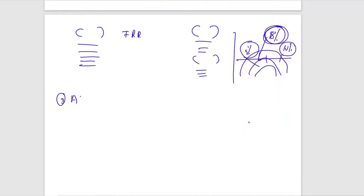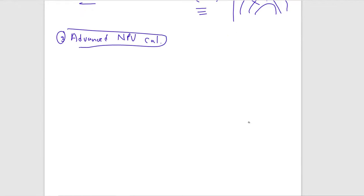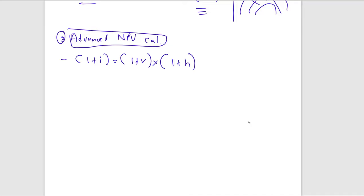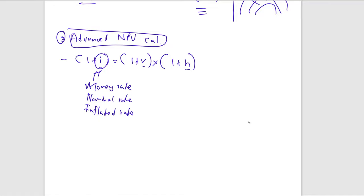The third area is advanced NPV calculation. The first key concept is Fisher's equation: (1 + i) = (1 + r) × (1 + h), where i is the money rate, r is the real rate, and h is inflation. The real rate is the not-inflated rate; once inflated, it becomes the money rate, also called the nominal or inflated rate.